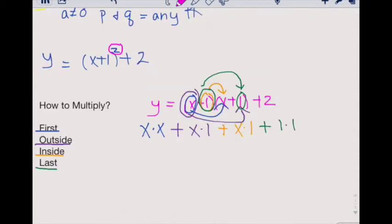And then we still carry down this plus two. If we simplify, we'll get x times x goes to x squared. X times one will give us x.